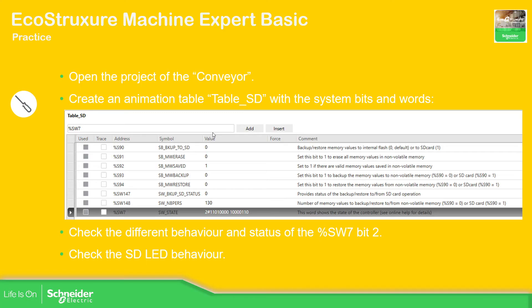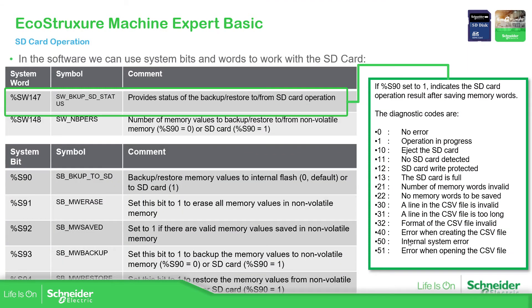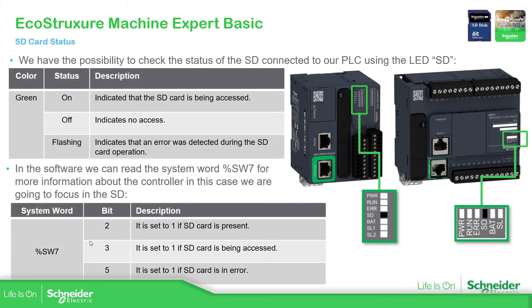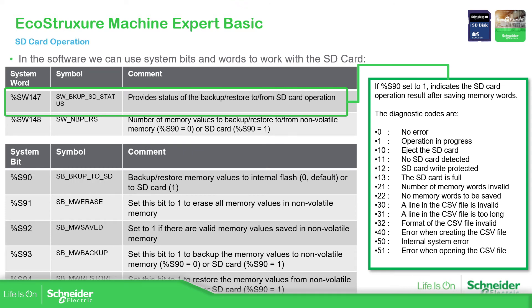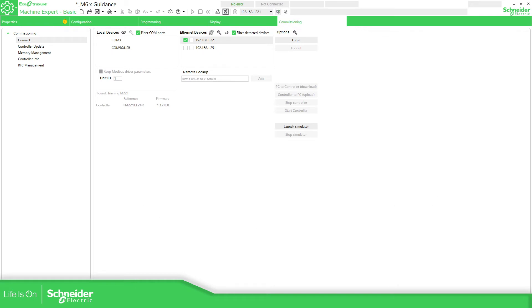Now let's create an animation table with all this information and check the status of %SW7 to see if the SD card is detected. %SW7 bit 2 is the one we want to monitor. Let's open our application — this is the one we were working with — and here is the SD card.